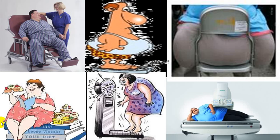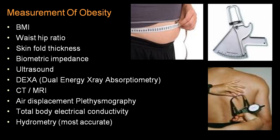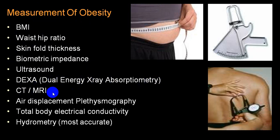Measurement of obesity can be done by BMI, waist-hip ratio, skinfold thickness, bioelectric impedance, ultrasound, DEXA scan (dual energy X-ray absorptometry), CT or MRI, air displacement plethysmography, total body electric conduction, and hydrometry. The most commonly used are BMI and waist-hip ratio. Skinfold thickness can be measured using a specialized instrument.